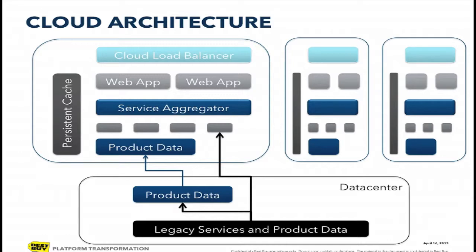We still have a lot of data back in our data center. Our product catalog is one thing that we've scaled out to be cloud-resident as well. The product catalog actually replicates out from our data center into all the different cloud regions. We serve about 90% of our product detail pages from the cloud right now, and we're trying to get to 100% this year.